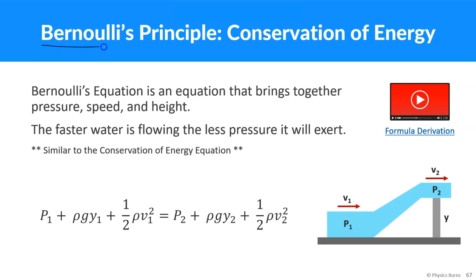Welcome back everybody to Bernoulli's Principle — Conservation of Energy. I think it's a great way of thinking about it. Bernoulli's equation is an equation that brings together pressure, speed, and height. The faster water is flowing, the less pressure it will exert. So it's a little counterintuitive, but the faster it's going at some point, that usually means there's going to be less pressure, similar to the conservation equation.